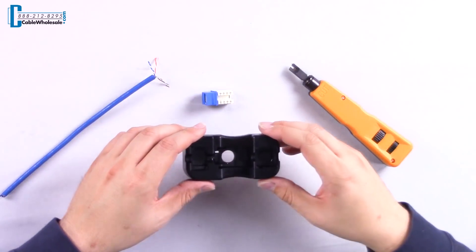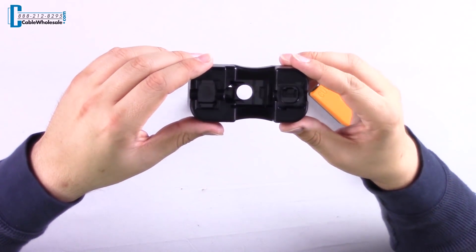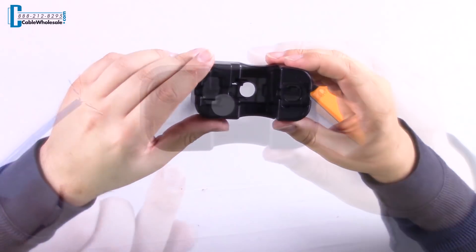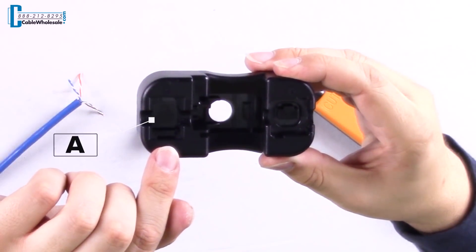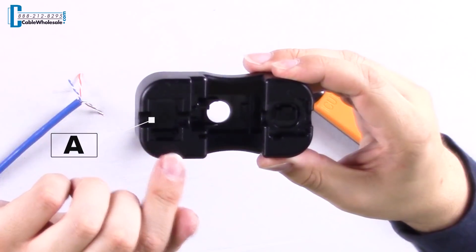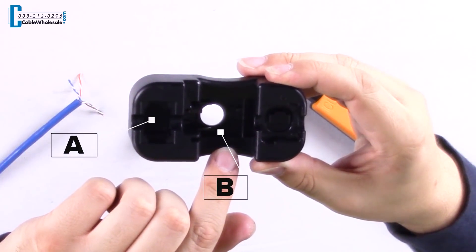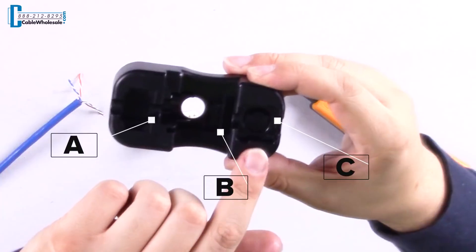Using this punch down stand provides a flat, sturdy base to do the work as it holds it securely. There are three positions: the A side is for 180 degrees, B side is for the US which we'll be using today, and C side is for Australia.